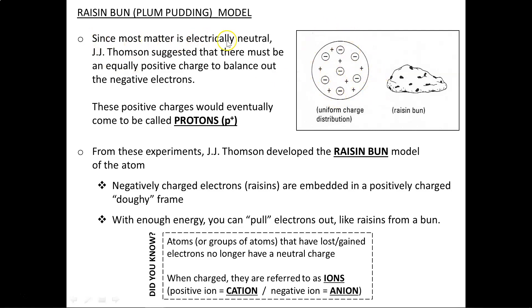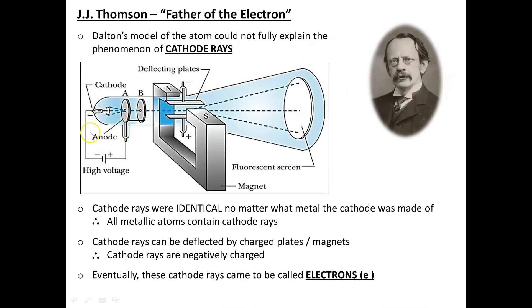Now since most matter is electrically neutral, J.J. Thomson suggested that there must be an equally positive charge to balance out the negative electrons. These positive charges would eventually be called protons. So now J.J. Thomson is updating the model of the atom and calling it the raisin bun model, where negatively charged electrons, these raisins, are embedded in a positively charged doughy frame. So essentially the big giant raisin bun is basically positive, with little negative electrons embedded inside of it as if they were raisins. And if you apply enough energy, you can actually pull these electrons out like you would pull raisins out of a bun. By applying a high voltage to the cathode, we could pull the electrons out of the atom itself.